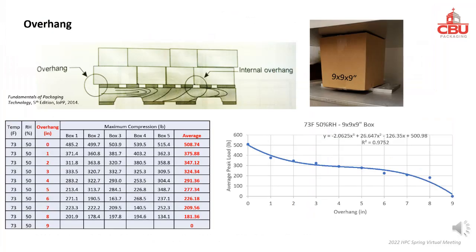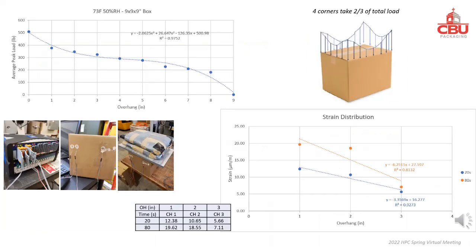Overhanging is common when boxes are placed on a pallet. In this experiment, boxes with different overhangs are compressed. It was shown that the longer the wall, the stronger the box; however, the distribution of load-carrying capacity along the wall is not the same. The four corners of the box carry about two-thirds of the total load, which explains why the rate of strength drop is faster near corners. Strain gauges were used to measure the strain distribution, which reflects the stress distribution.